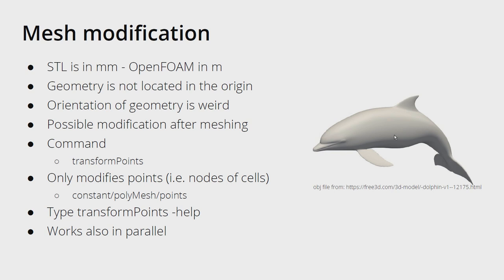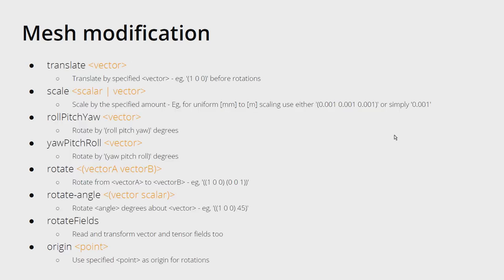I wanted to compare my geometry with the real-life geometry, opened up the simulations in ParaView, and they were meters away from each other. With transformPoints you can translate your mesh wherever you want, and if your geometry is oriented weirdly you can rotate it. If you've already created your mesh with millions of cells, you can do this after meshing. You can type transformPoints -help in your terminal to get all the possibilities, and it also works in parallel.